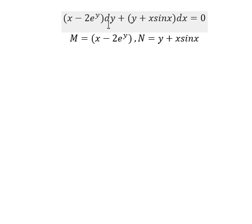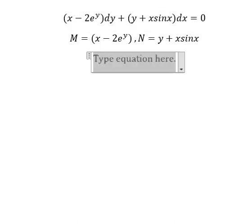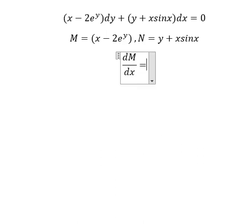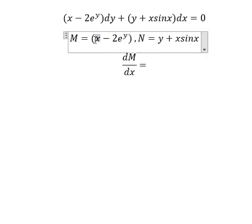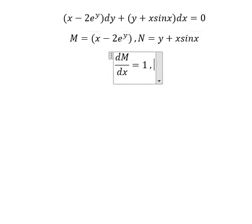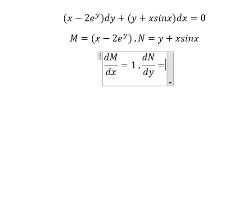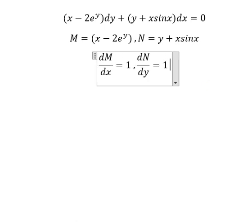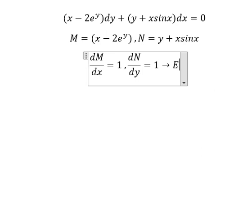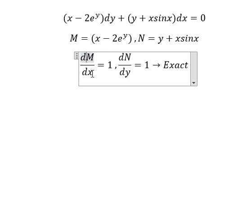So because we have dy, that means we need to do the first derivative of M with respect to x. So we just have only x, so you get number 1. This one you get number 0. Similarly for the second one, we have number 1. So this is exact because this one equals this one — both give number 1.